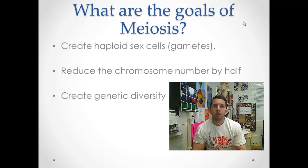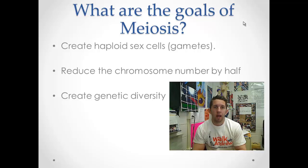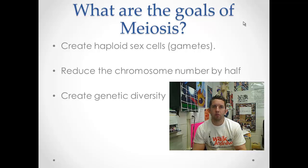The goals of meiosis — keep these in mind as we go through this process. The first goal is to create haploid sex cells, haploid gametes. We need to reduce the chromosome number by half — in humans, from 46 chromosomes down to 23, or else we have problems. And lastly, we need to create genetic diversity. Unlike mitosis, which produces no genetic diversity, meiosis introduces genetic diversity into sexually reproducing organisms.